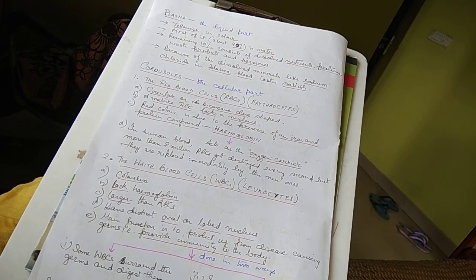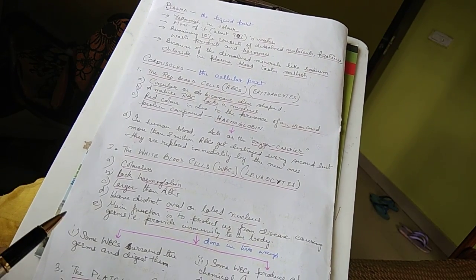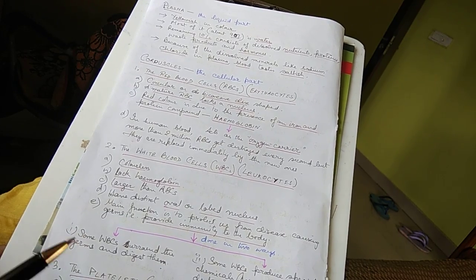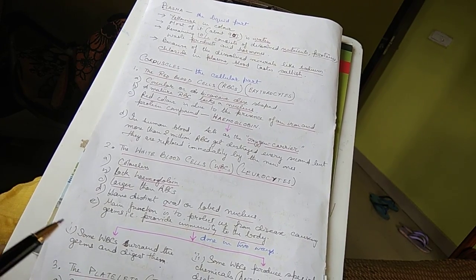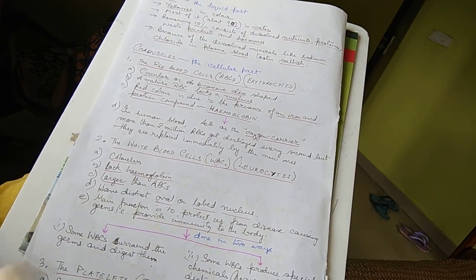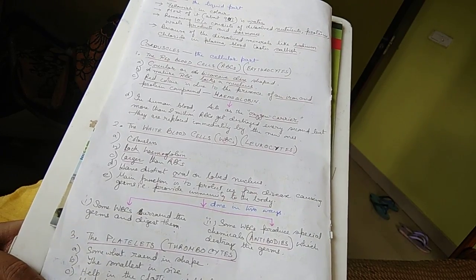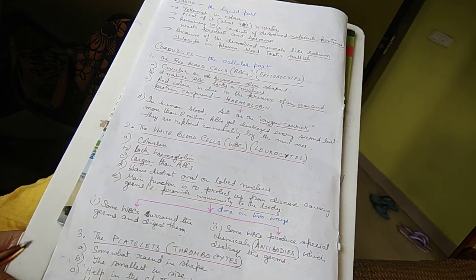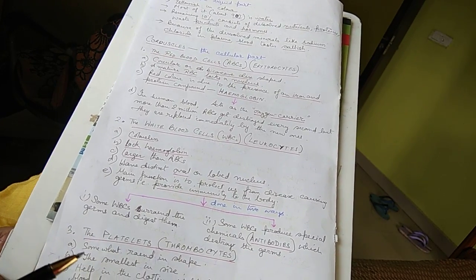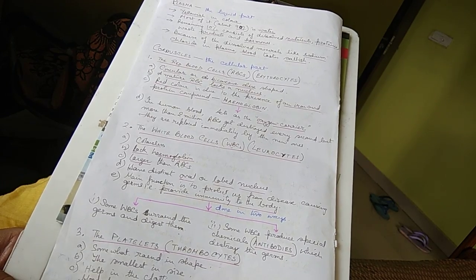Now white blood cells or WBC or leukocytes - they are colorless, lack hemoglobin, larger than RBC, have distinct oval or lobed nucleus. Main function is to protect us from disease causing germs, that is provide immunity to the body. That is done in two ways: some WBCs surround the germs and digest them, and some WBCs produce special chemicals, antibodies which destroy the germs.